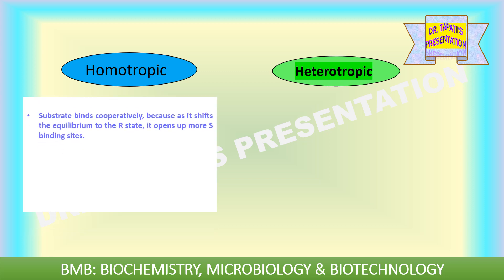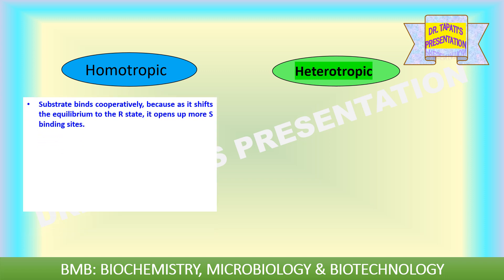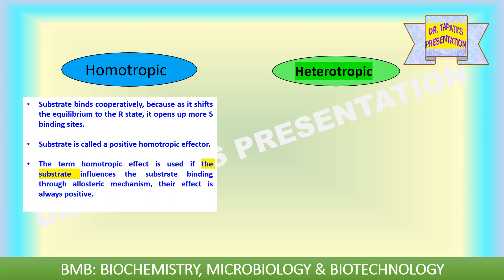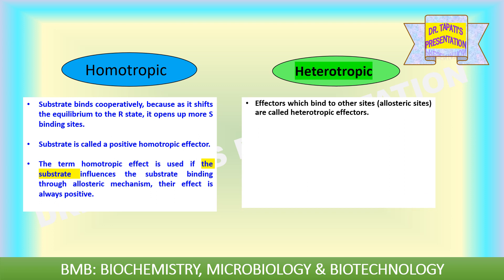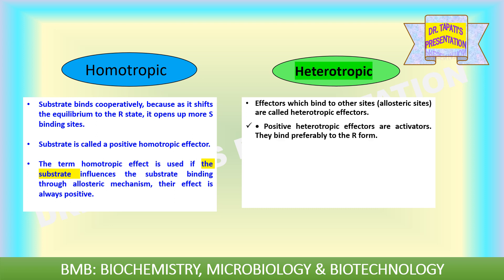Let us know about homotropic and heterotropic effectors. Substrate binds cooperatively because as it shifts the equilibrium to the relaxed state, it opens up more substrate binding sites. Therefore, substrate is called a positive homotropic effector. The term homotropic effect is used if the substrate influences substrate binding through an allosteric mechanism — their effect is always positive. Effectors which bind to other sites, that is allosteric sites, are called heterotropic effectors. Positive heterotropic effectors are activators and they bind preferably to the relaxed state, whereas negative heterotropic effectors are inhibitors and they bind preferably to the tense form.